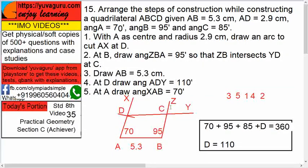So draw this 95 degrees and you'll get this point C which will cut DY, right? So the quadrilateral is constructed. The sequence is 3-5-1-4-2.